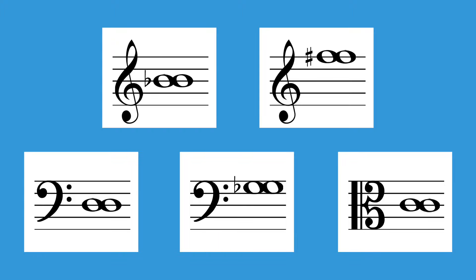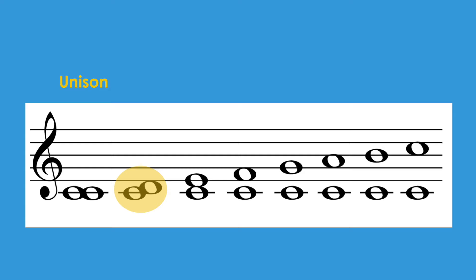Next, the distance between C and D. If we count the C line as 1 and the D space as 2, this is a distance of a second. Next, the distance between C and E. C line is 1, D space is 2, and E line is 3. So this distance is a third.